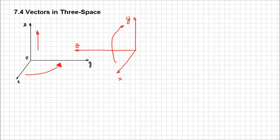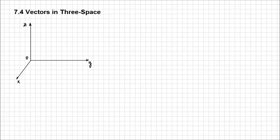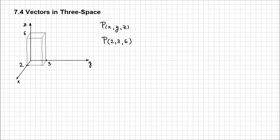Another thing you need to be able to do is represent points in 3-space. Besides the x and y coordinates, you have the z-coordinate. For example, if you have to sketch the point with coordinates 2, 3, and 6 — these are the x, y, and z coordinates — look on each axis and place those values to the corresponding axis. Try to sketch all the helping lines. This is how you determine your point P. In this case, 2, 3, and 6.